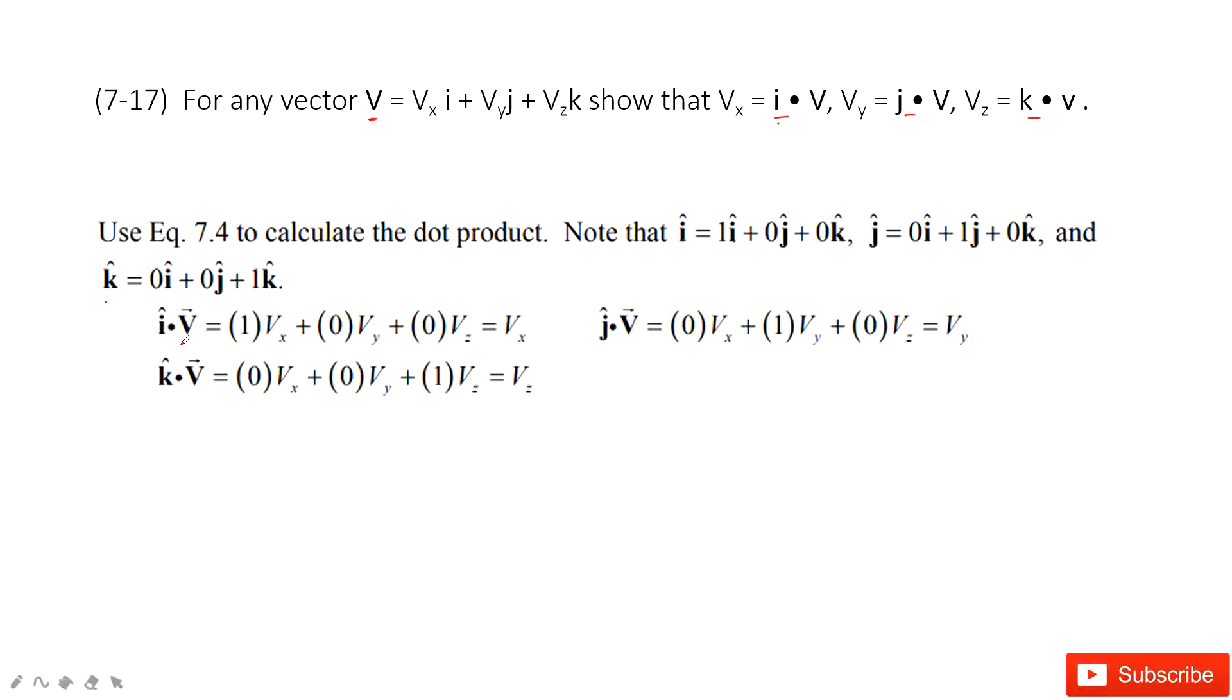Then we do the dot product. For example, i·v is just the x component of i times vx. Then the y component of i is zero times vy. Similarly, plus the z component zero times vz. And then we find it's vx. And similarly, we can get j·v and k·v.